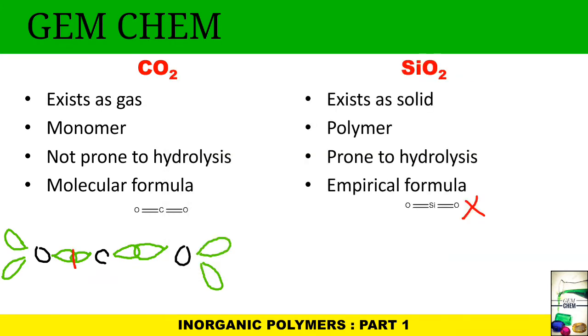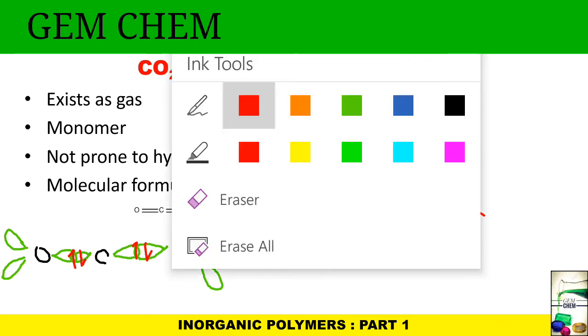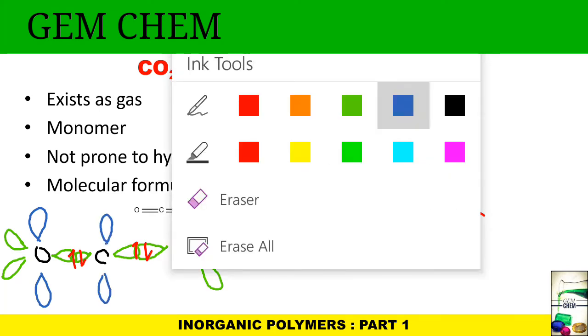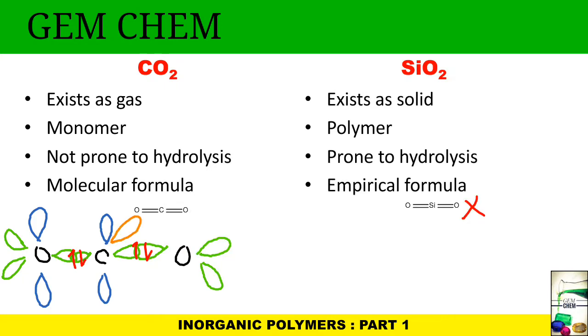Carbon dioxide has one hybridized orbital. Carbon has one, oxygen has one, similarly here. There are unhybridized p orbitals present here and here also, and in the perpendicular plane there is another orbital. Similarly here, in the perpendicular plane, another p orbital.